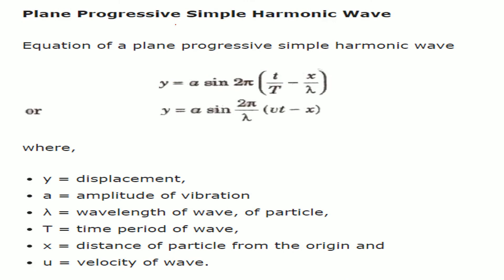The equation of a plane progressive simple harmonic wave is given by y = A sin(2π(t/T − x/λ)), where y is the displacement, A is the amplitude, λ is the wavelength, T is the time period, and x is the distance of the particle from the origin. There is another equivalent form of this equation.